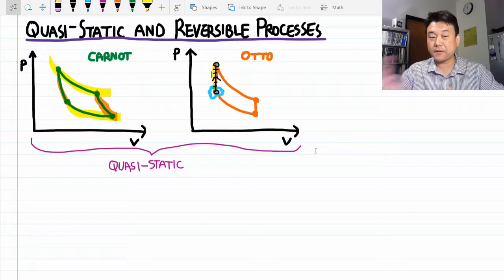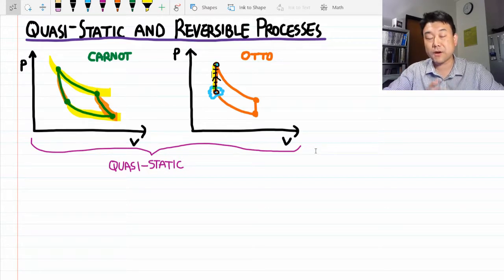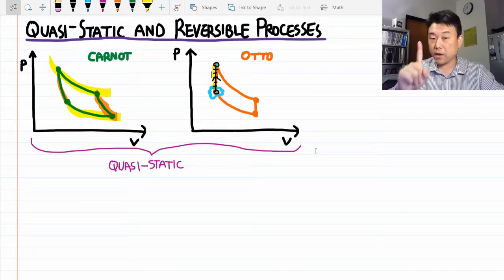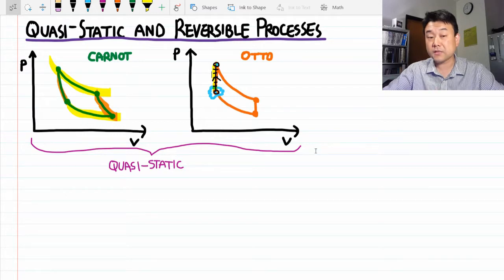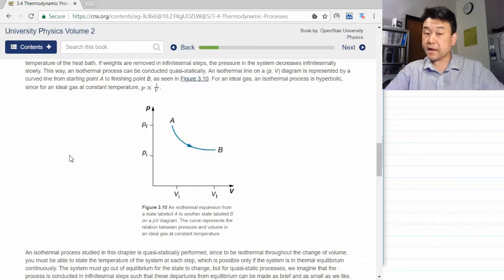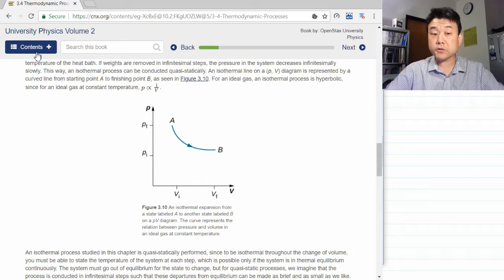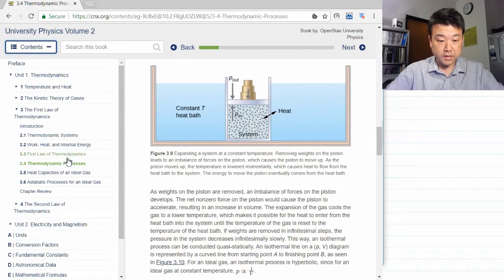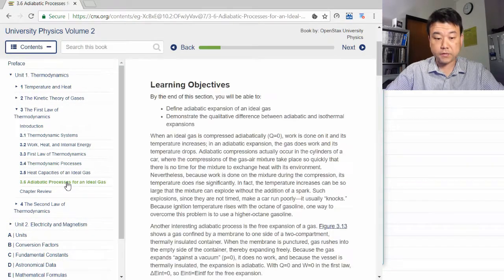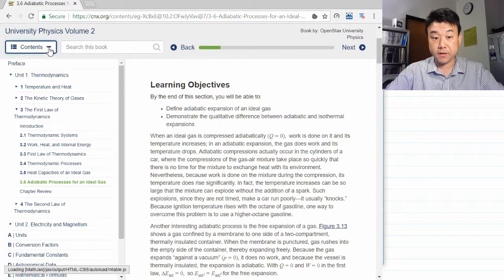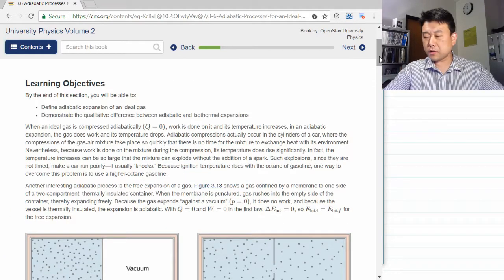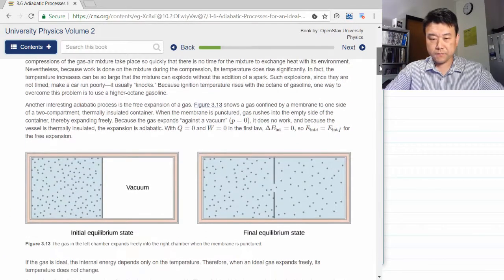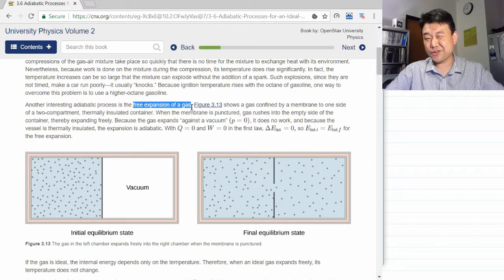Otherwise we can't analyze it since there's no path to calculate work over and calculate heat transfer over. Now, lest you think we never dealt with a non-quasi-static process, there is one example we looked at that is non-quasi-static. That example we looked at was also in Chapter 3 in Section 3.6 as we were discussing adiabatic processes. It was under the term free expansion of gas.